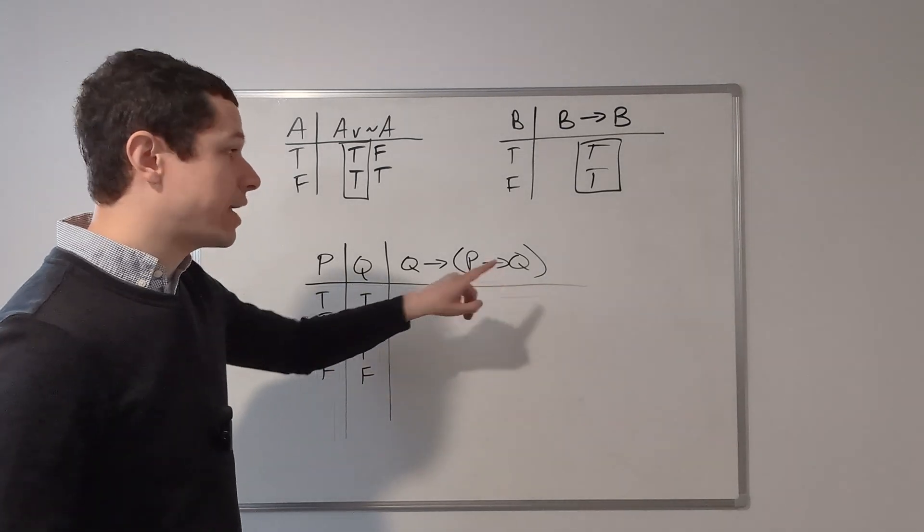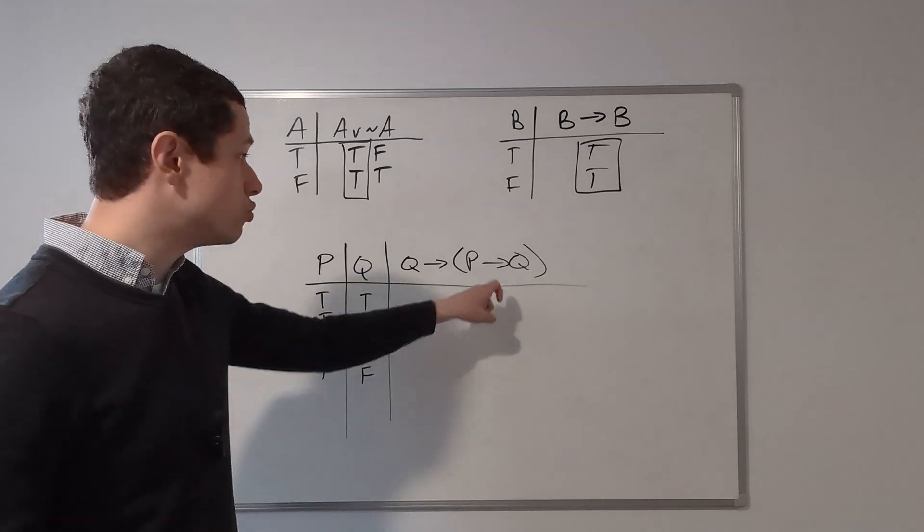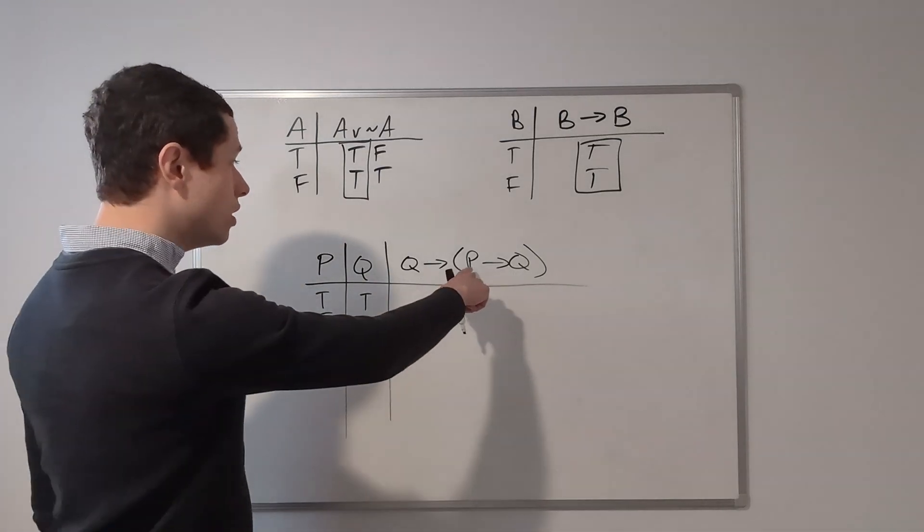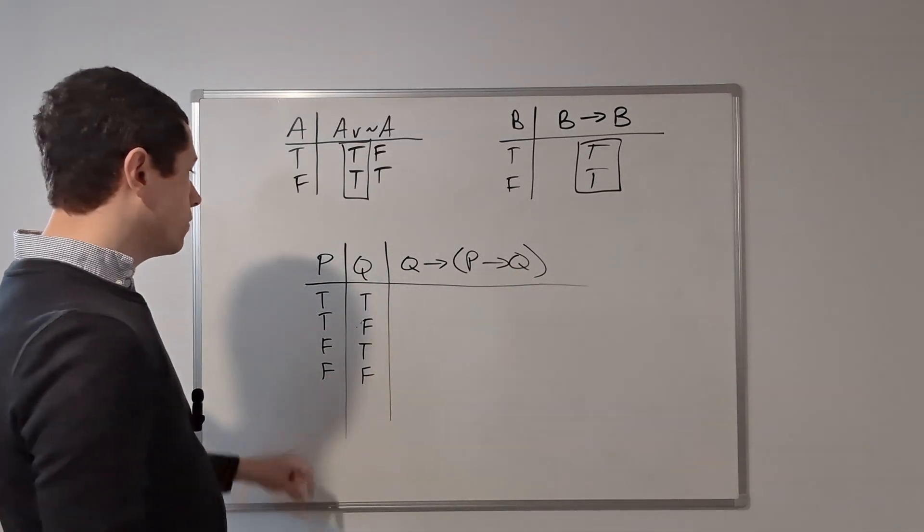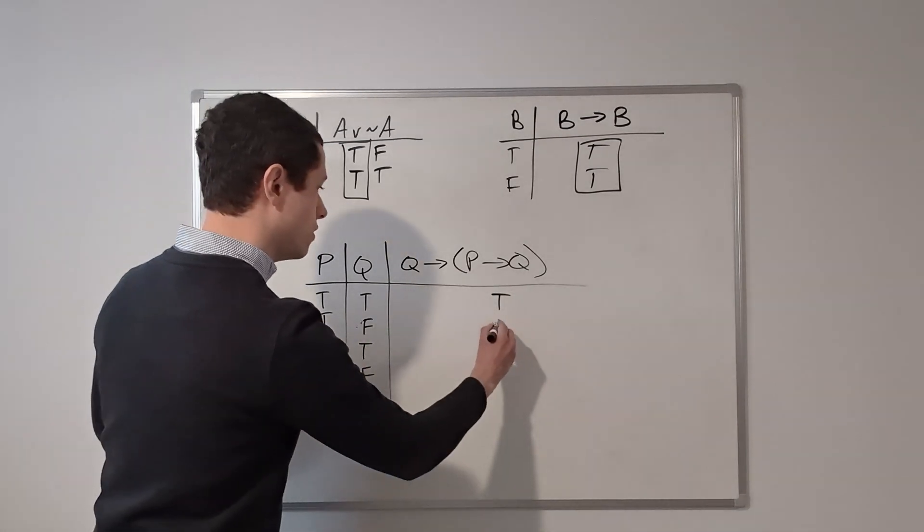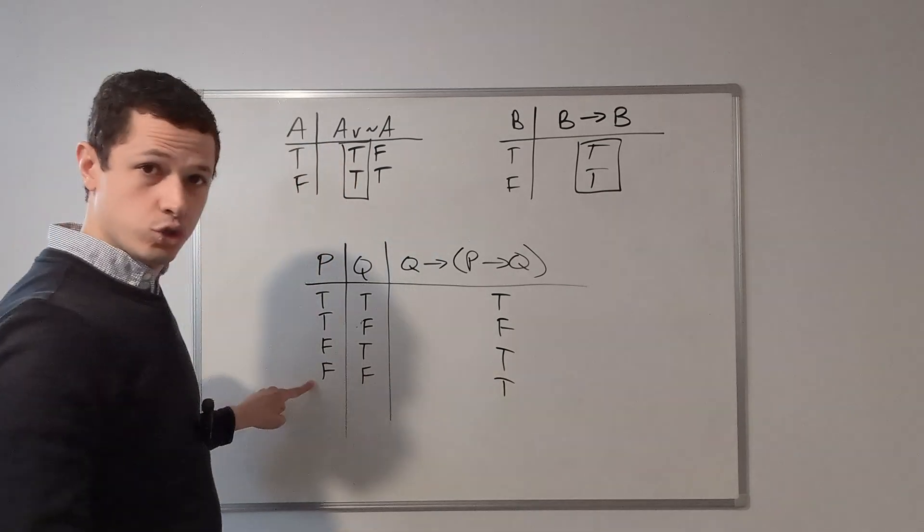So we're going to start by calculating inside of these parentheses, because that's how you always calculate compound statements in truth tables. You start with the innermost connectives and work your way out. So we have P implies Q. So true implies true. That's true. True implies false. That's false. False implies true. That's true. False implies false. That's true.